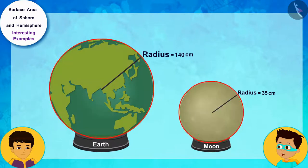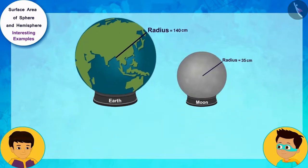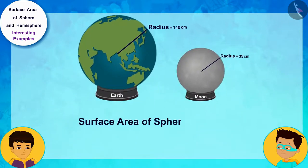I remember the formula for the surface area of sphere. The surface area of sphere is 4 times pi r square, where r is the radius of the sphere.